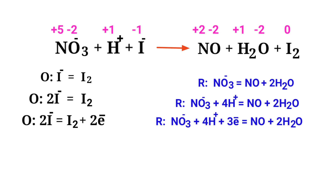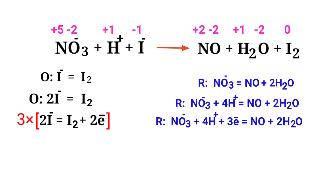Make electron gain equivalent to electrons lost — the electrons lost in oxidation must equal the electrons gained in reduction. The oxidation half reaction has two electrons and the reduction half reaction has three electrons. To equalize, multiply the oxidation half reaction by a coefficient of 3 and the reduction half reaction by a coefficient of 2, giving 6 electrons in both.